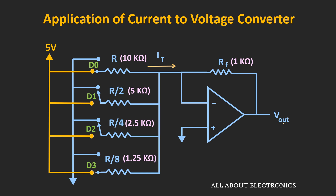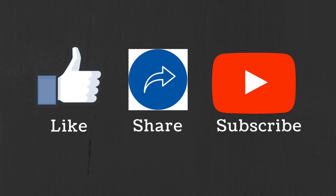These are some of the applications of this current-to-voltage converter. I hope in this video you understood how to design the current-to-voltage converter using the op-amp and its different applications. If you have any questions or suggestions, do let me know in the comment section below. If you like this video, hit the like button and subscribe to the channel for more such videos.